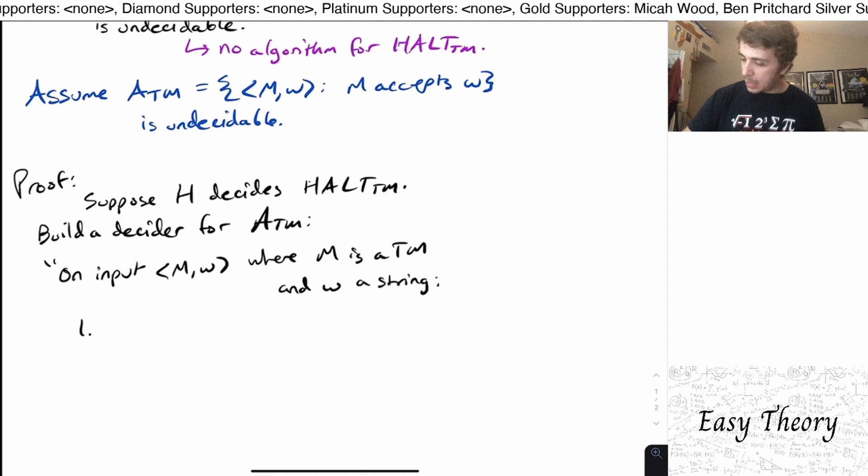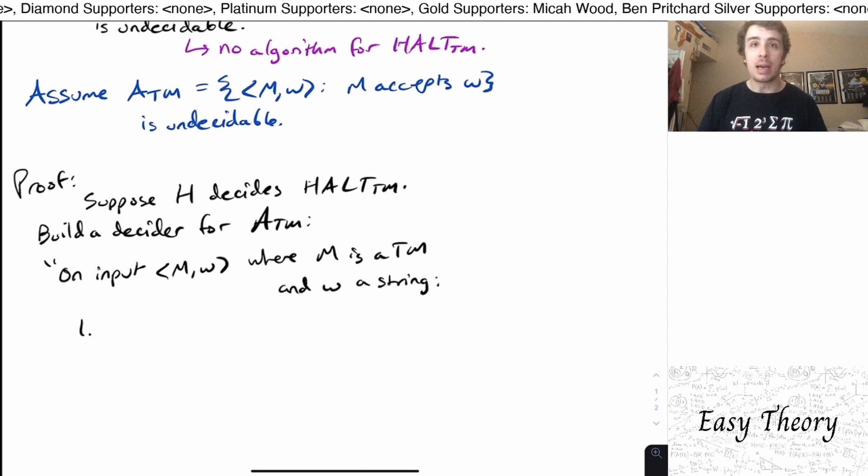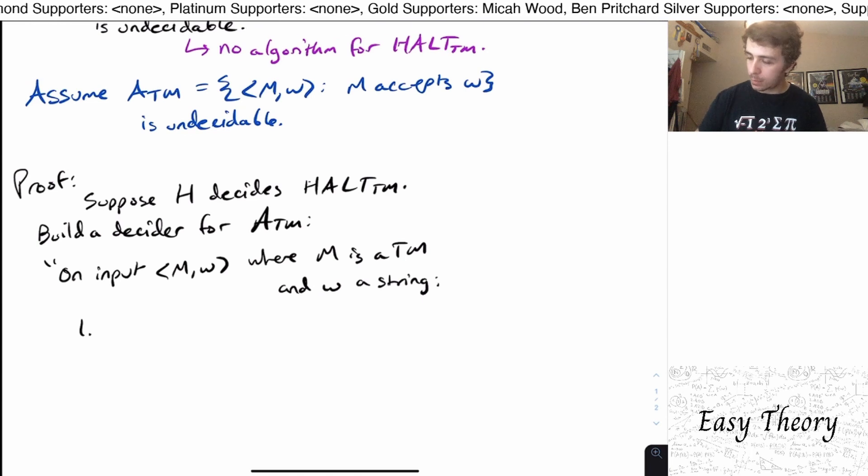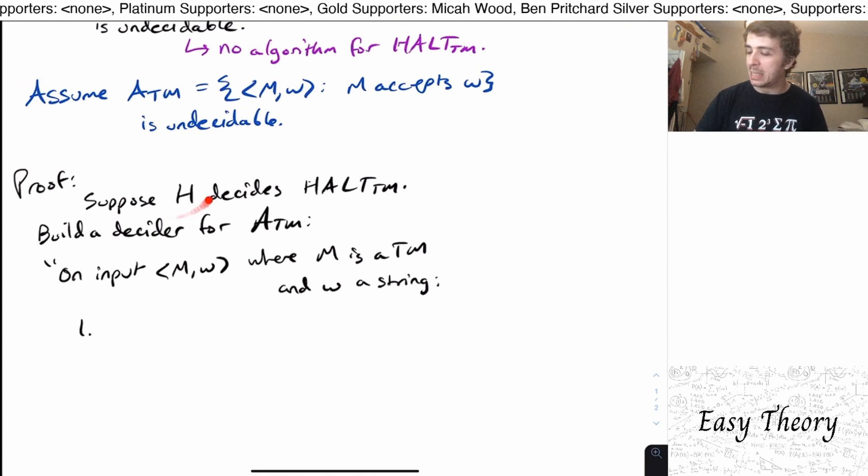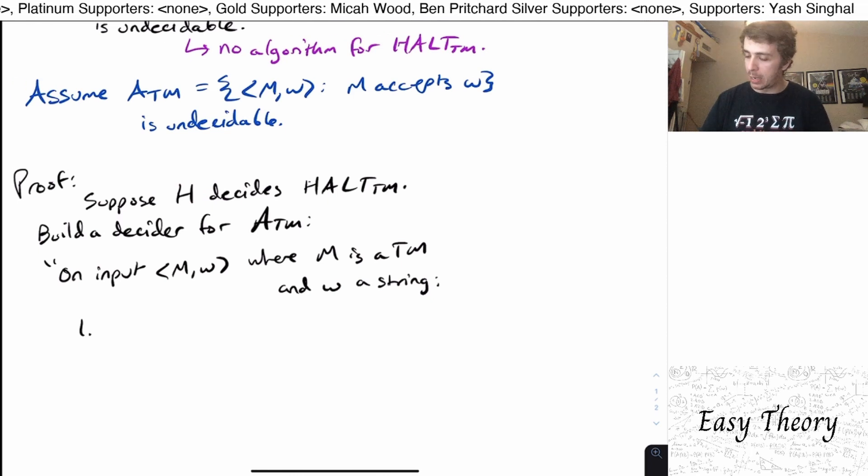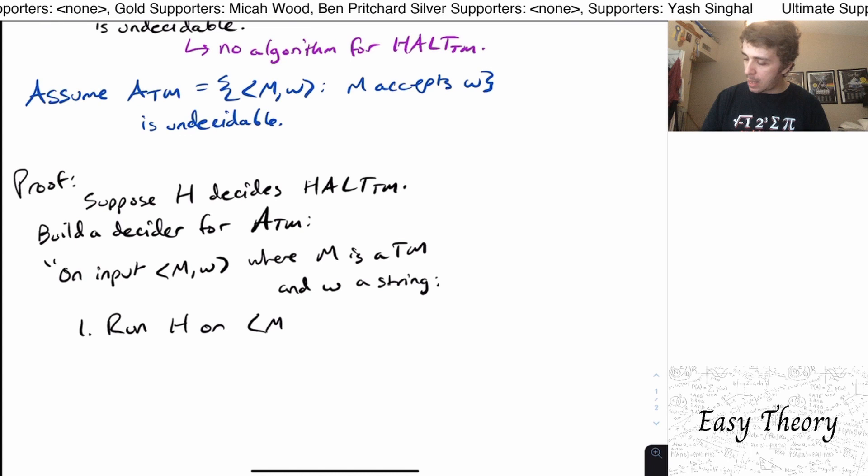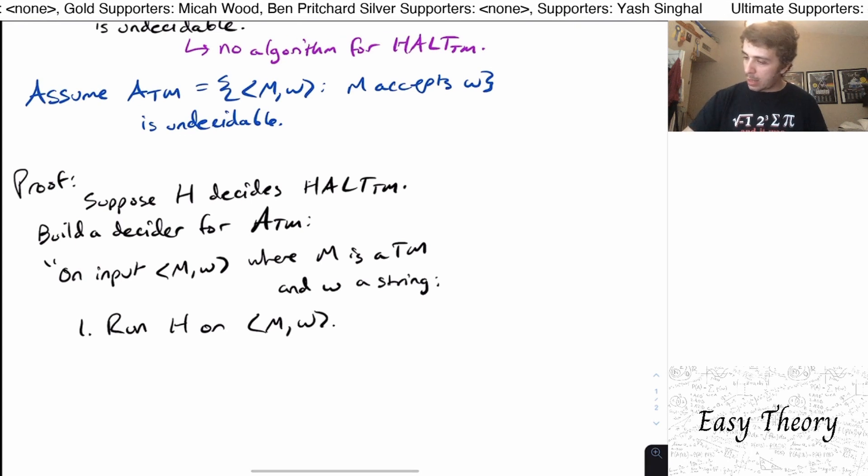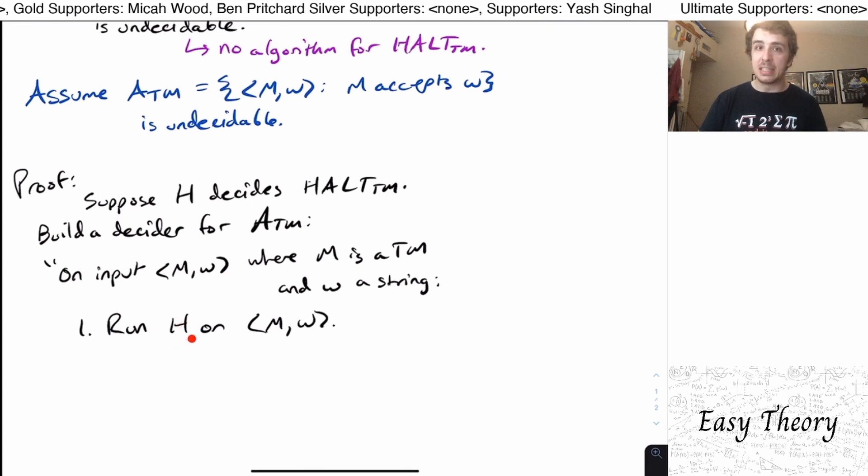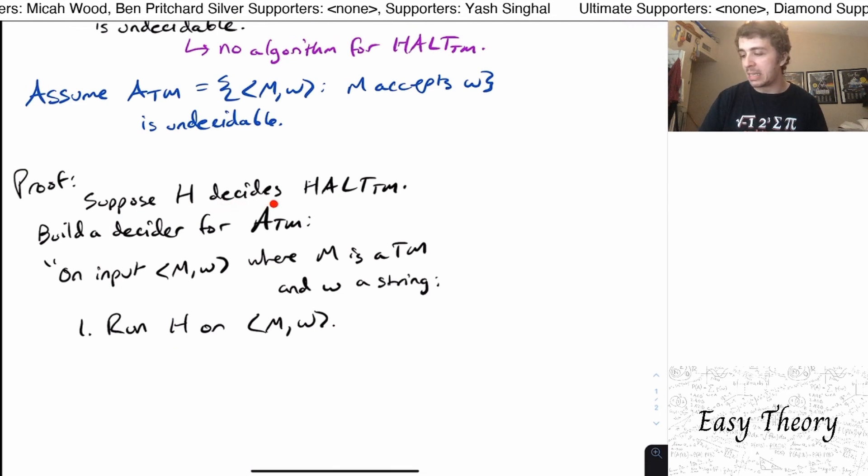Well, if I just try to run the machine M on W, again, it could run forever. So let's utilize this decider H to figure out whether the machine even stops or not. So let's run H on MW. Well, H will either say it does halt or it doesn't, because we're supposing that it decides, this machine decides that language.